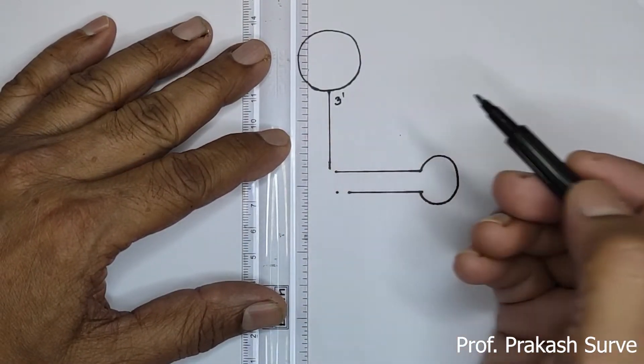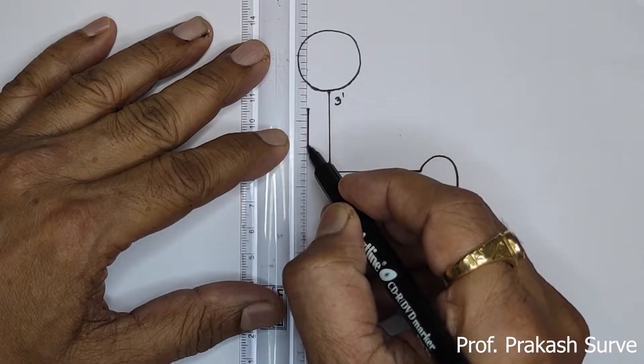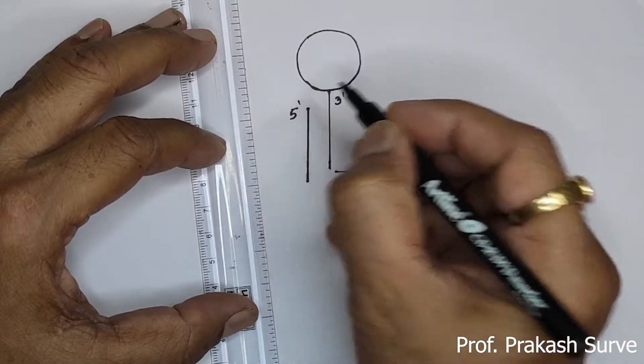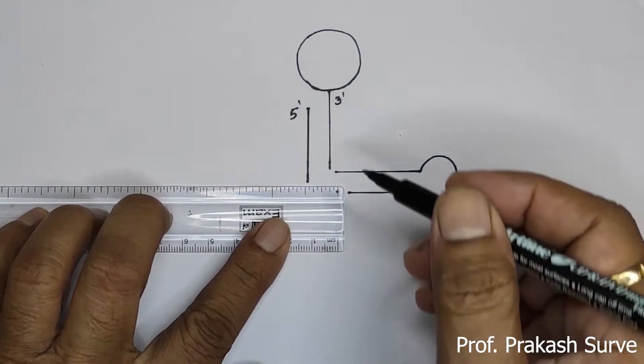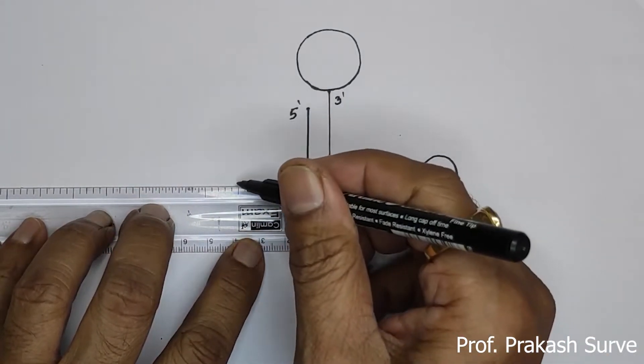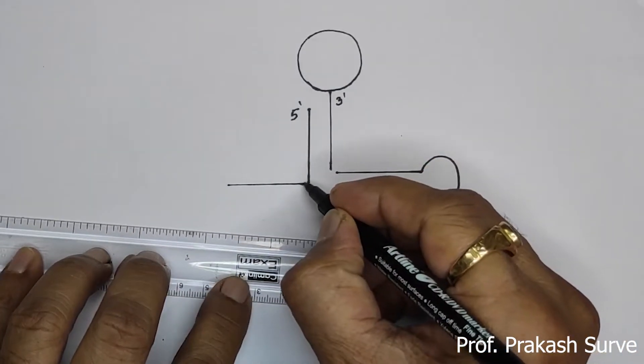Now here we will draw the corresponding line which is shorter. So this will be a 5' end. And now continue this here. So this will join here.